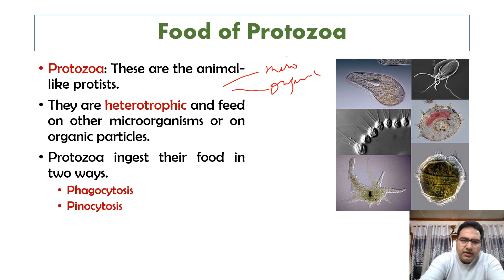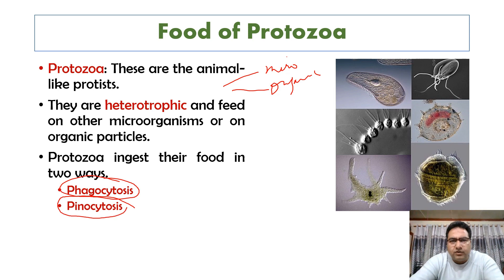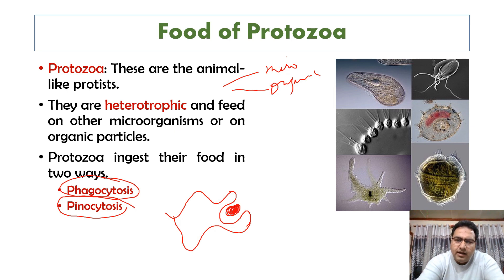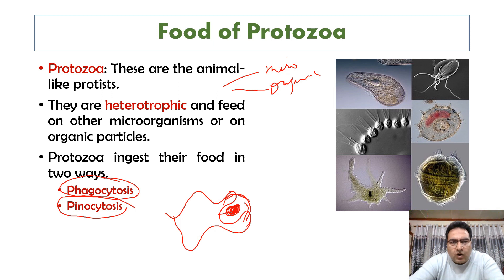Protozoans ingest food either by phagocytosis or by pinocytosis. In phagocytosis, a flexible portion of the cell membrane surrounds a food particle and engulfs it, bringing it into a cell vacuole. For example, in amoeba, when a food particle comes in contact with it, it engulfs the particle by putting pseudopodia around it. Phagocytosis is used to ingest other unicellular organisms or large particles.